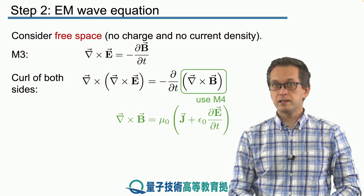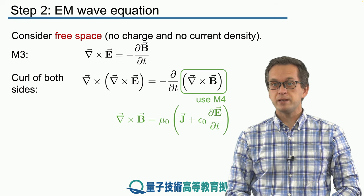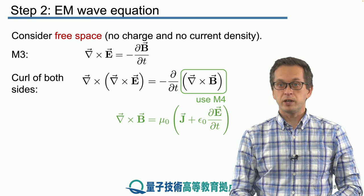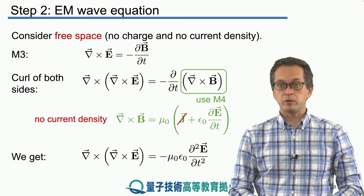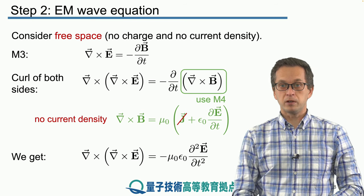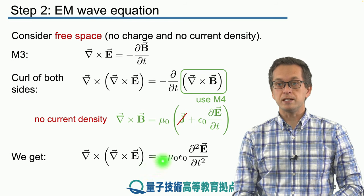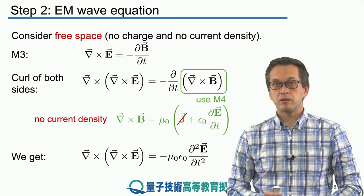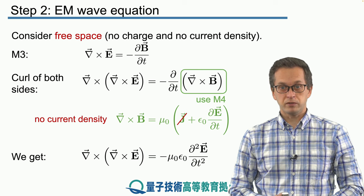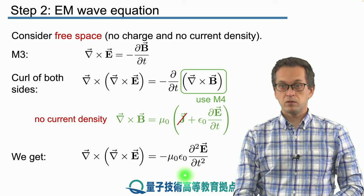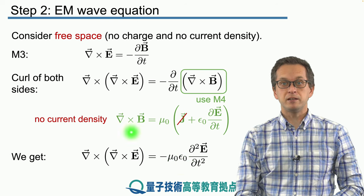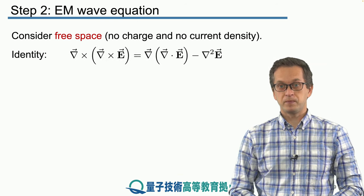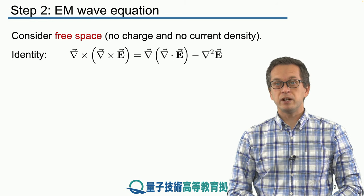Remember that in this scenario we are considering free space, meaning there is no current density, so we can safely set j equal to zero. Upon substitution, we get that the curl of the curl of E is equal to minus mu naught times epsilon naught times the second order time derivative of the electric field. We are done massaging the right hand side; now we apply identities to the left hand side to simplify.